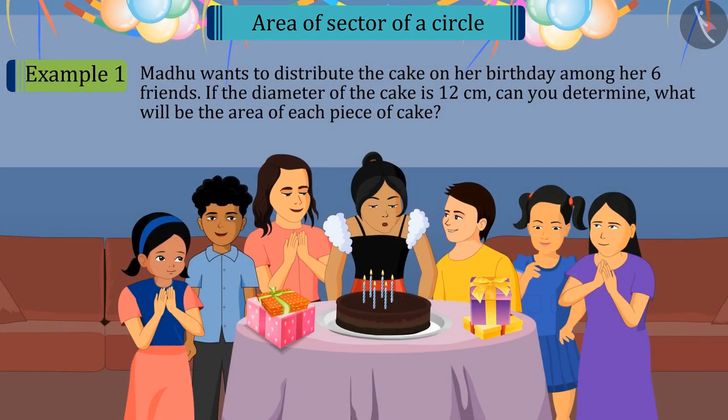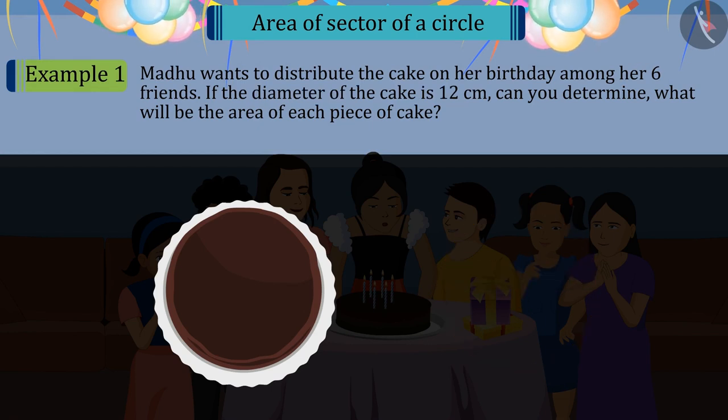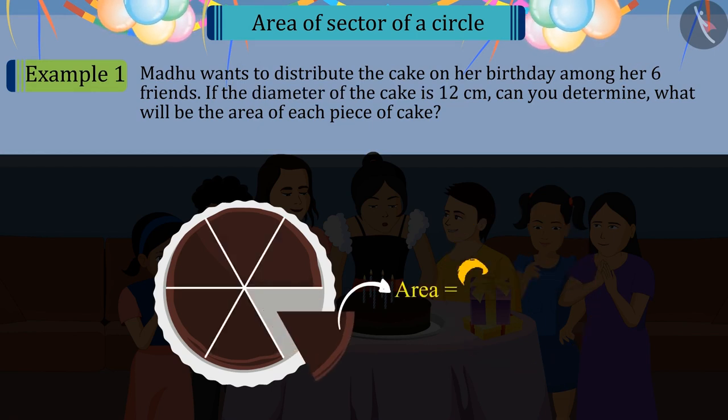Madhu wants to distribute the cake on her birthday among her six friends. If the diameter of the cake is 12 cm, can you determine what will be the area of each piece of cake? Come, let's try to solve this question.